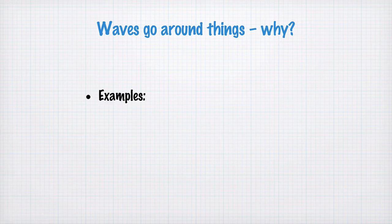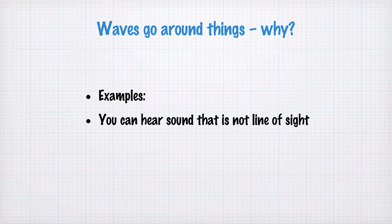What are some examples? You can hear sound that's not in line of sight. So you might have someone speaking to you from another room and you're around a corner. You can still hear them. That's to do with diffraction. Also reflection, but definitely diffraction as well.